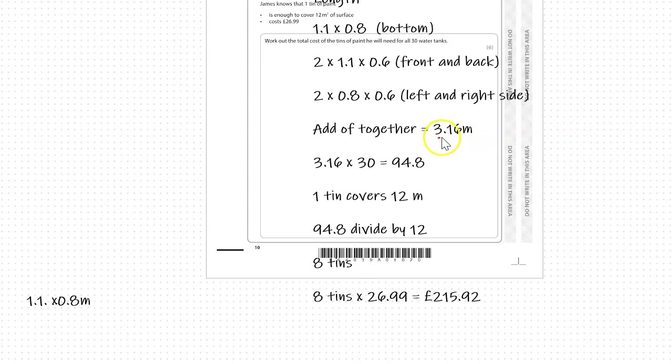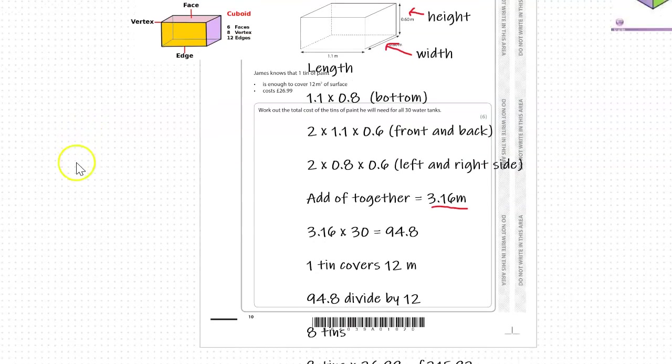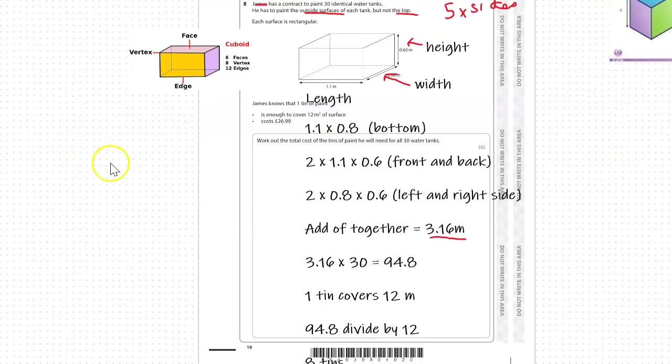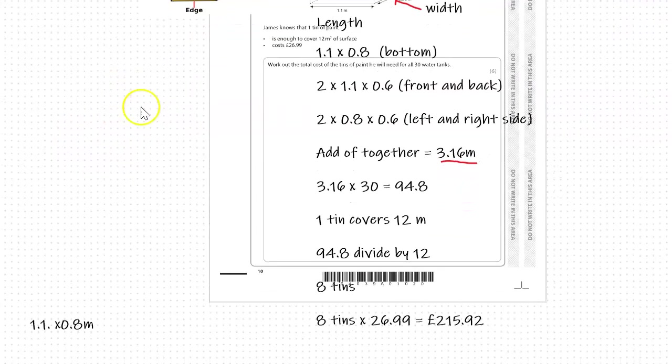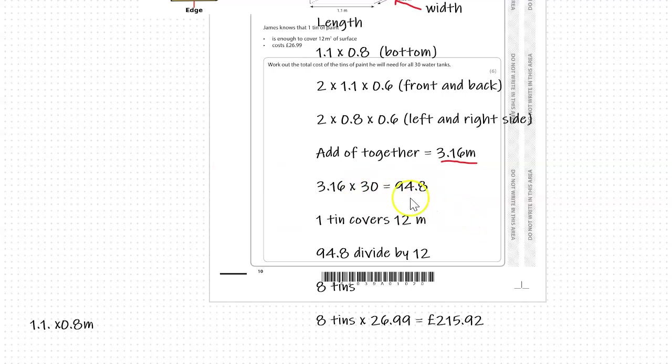Add them together, you get 3.16 meters squared. The question asks us for 30 of them, so 3.16 times 30 equals 94.8 meters squared. We've worked out the surface area.